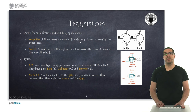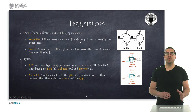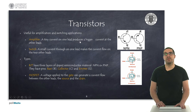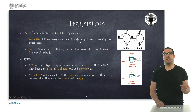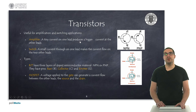Transistors are also made from semiconductor materials and can be used for amplifying signals or for switching applications — allowing or not allowing current to flow. We can find two main types of transistors. The BJT has three different layers: the base, the collector, and the emitter. A small current applied to the base allows current to flow between the collector and the emitter. We also have the MOSFET, which is widely used and can work with higher currents than BJT transistors.